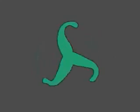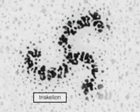In the electron microscope, individual clathrin molecules can be seen as three-legged structures called triskelions.